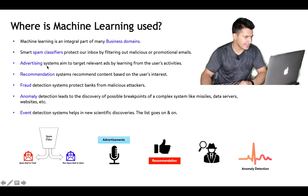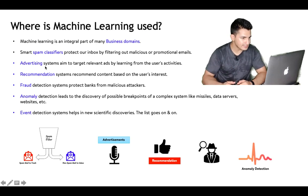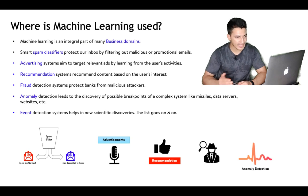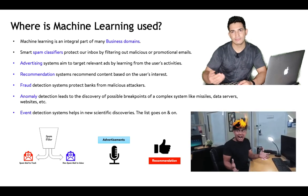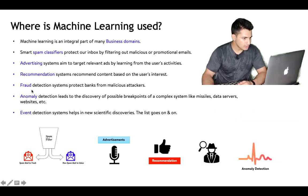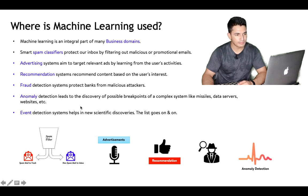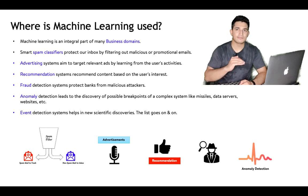Machine learning is also used in advertising systems that aim to target relevant ads by learning from user activities — figuring out who is the right user to show which ad. It's also used in recommendation systems to recommend the right content to the user. For example, based on our watched video history, YouTube starts suggesting similar videos. It's also used in fraud detection systems to protect banks from malicious attackers.